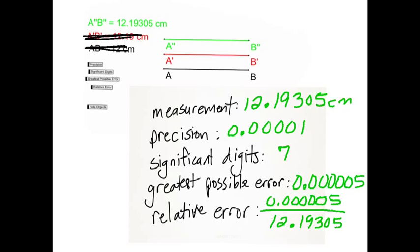Greatest possible error would be 5 millionths. And then we take that number, greatest possible error, divide it by our measurement. And we're going to get this answer up here, 0.00000041.